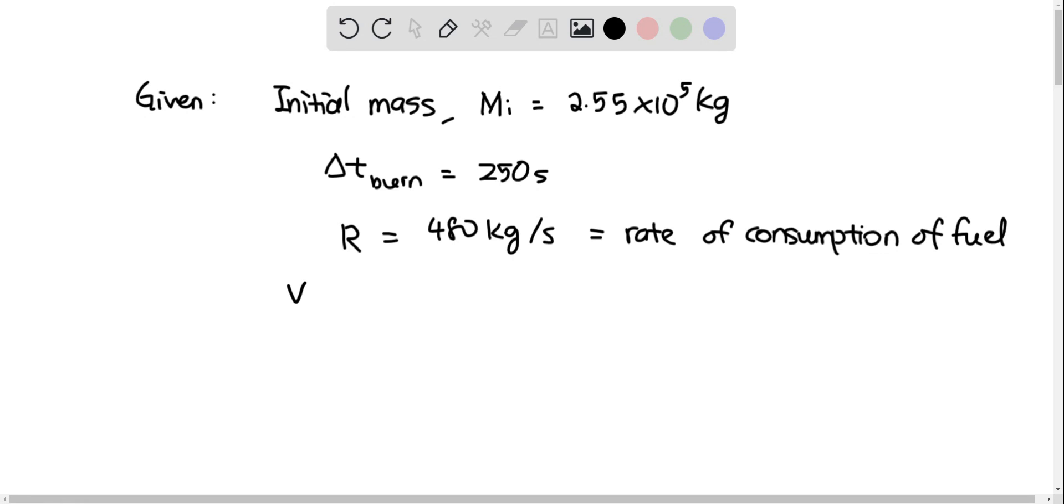We are also given that the speed of the exhaust products relative to the rocket is 3.27 km per second.